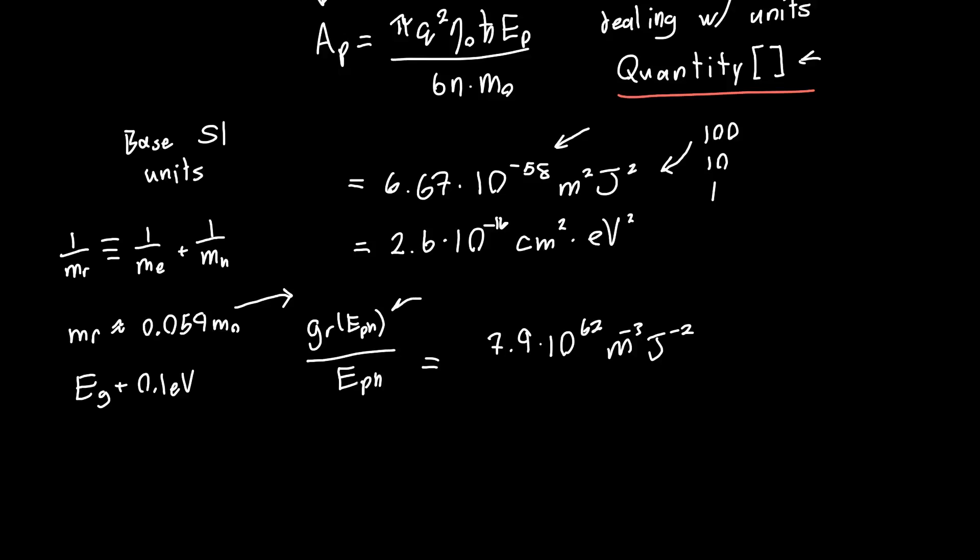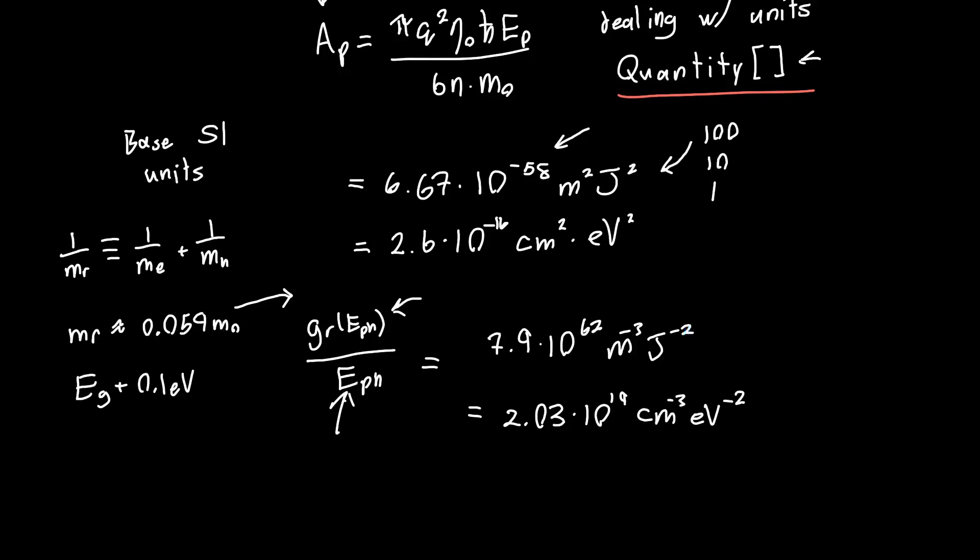And so the units of the density of states, again, are per volume per energy. So that's the meter to the minus 3 joule to the minus 1. And then we're dividing by another energy. And in nicer units for what we're dealing with, this is 2.03 times 10 to the 19 per centimeter cubed per electron volt squared.